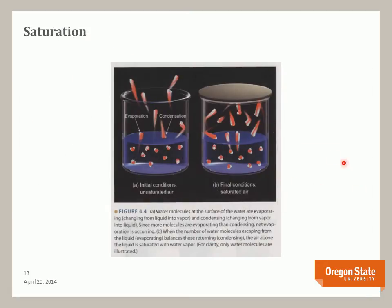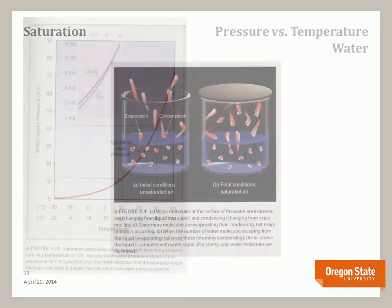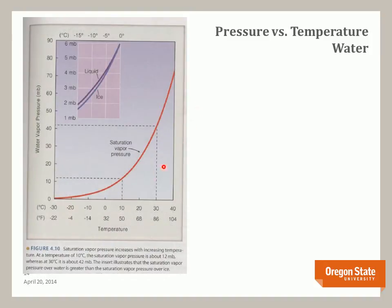In this model, saturation is reached when the number of molecules escaping from the surface equals the number returning. At higher temperatures you need more water vapor to saturate the air. This graph shows that relationship: as you increase temperature, the saturation vapor pressure also increases. For example, at 10 degrees Celsius the saturation vapor pressure is around 12 millibars, while at 30 degrees Celsius it is approximately 42 millibars.